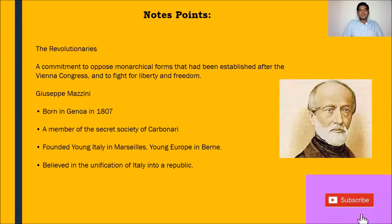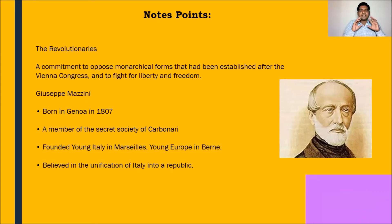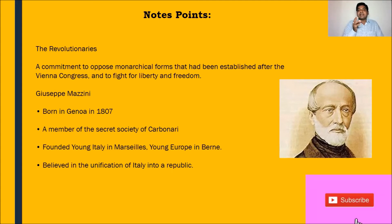Key points about Mazzini: a revolutionary is one committed to opposing the monarchical forms established after the Congress of Vienna. Mazzini was born in Genoa in 1807, was a member of the secret society of Carbonari, and founded the Young Italy movement in Marseilles and Young Europe in Bern. He believed in the unification of Italy into a republican state. Note: Mazzini joined the already-existing Carbonari society — he did not initiate it.